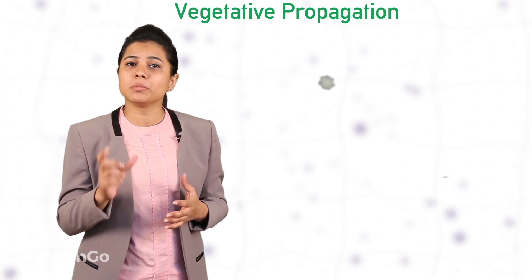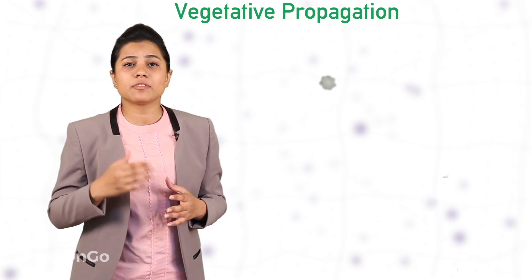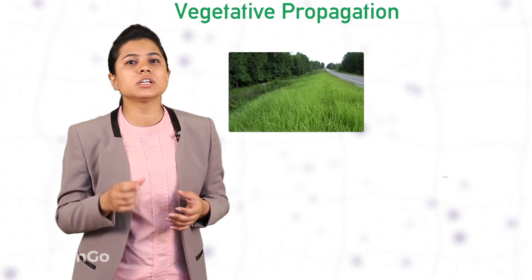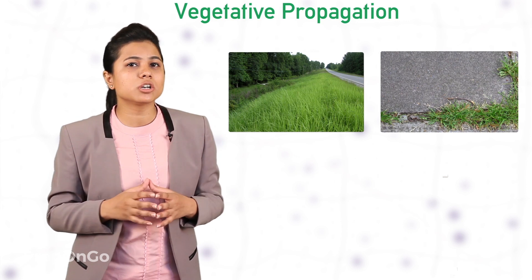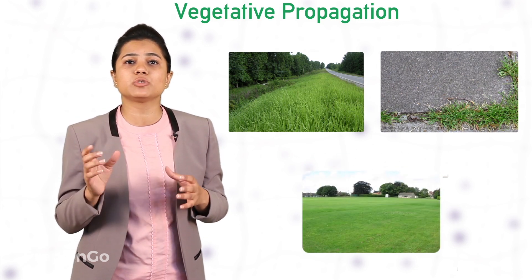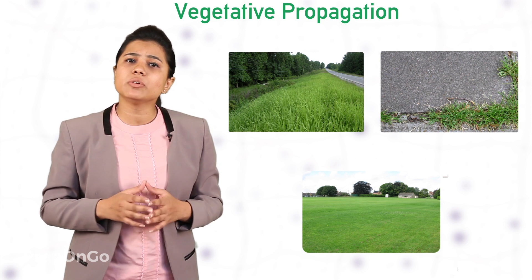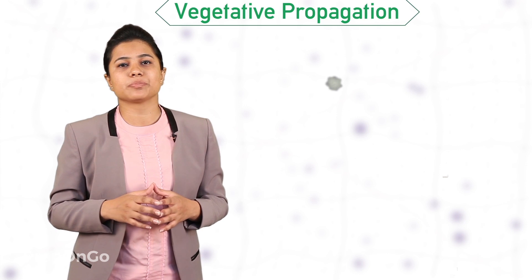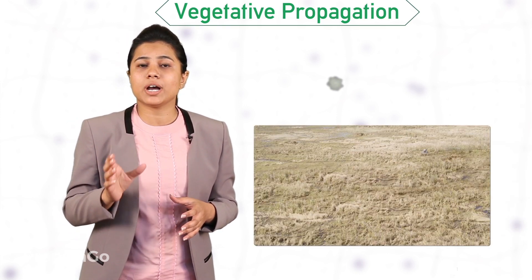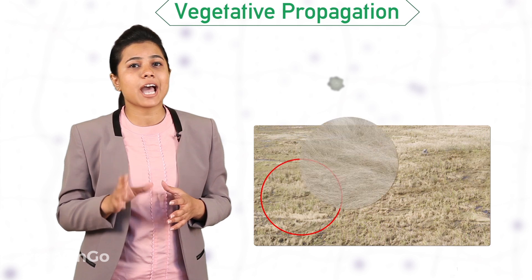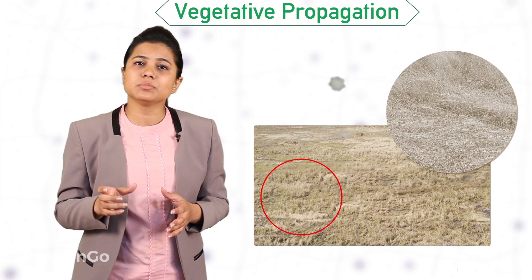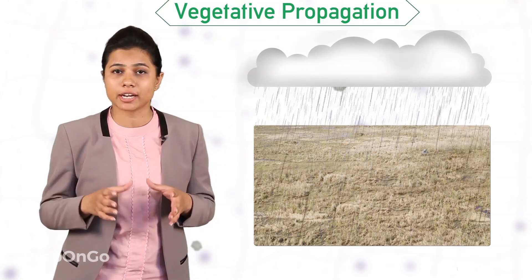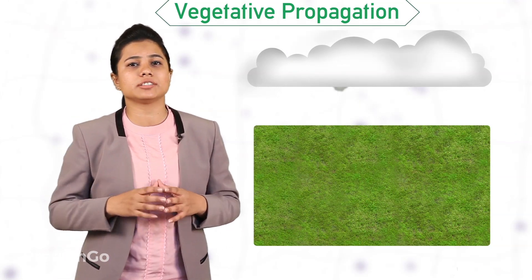You must have observed a common phenomenon — whenever it rains, new grass springs up everywhere: on the sides of roads, in the sidewalks, through the concrete, and even in the fields where you play, which were dry earlier. The reason is vegetative propagation. The fields have dry stems of grass, and these stems have inactive buds in them. When rain falls on the buds, they get activated and new grass is produced.